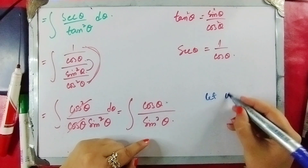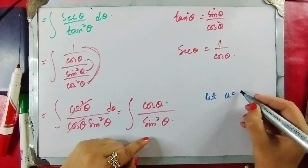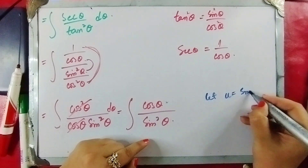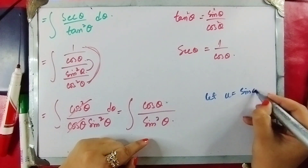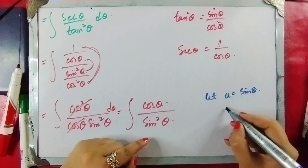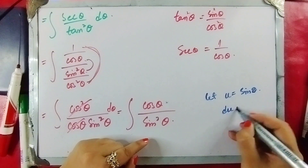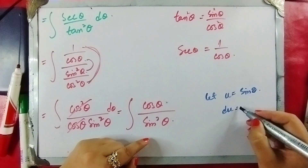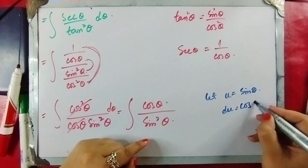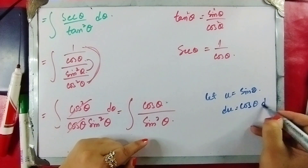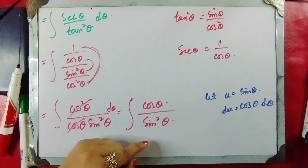We let u equal sin of theta, so du equals cos of theta d-theta.